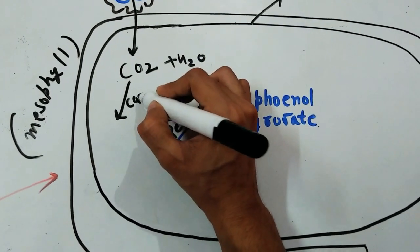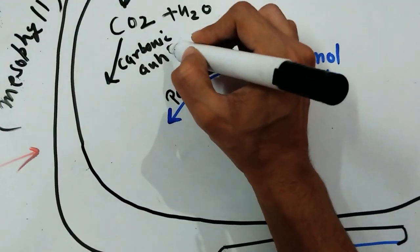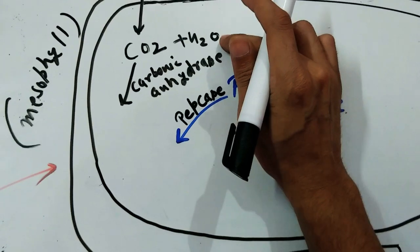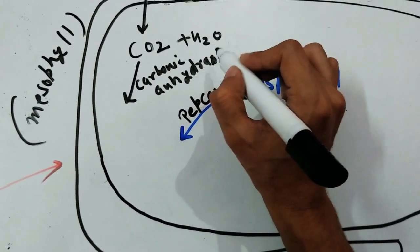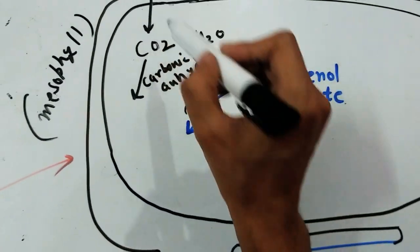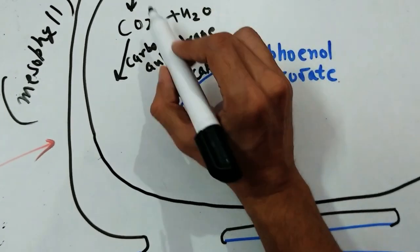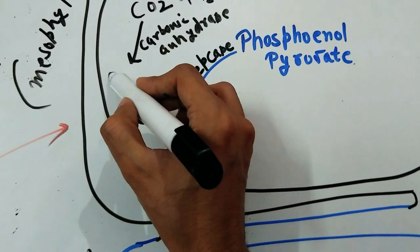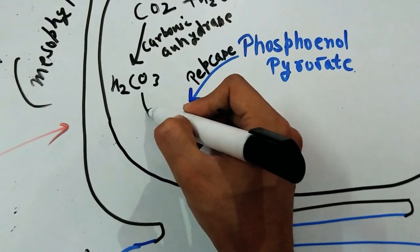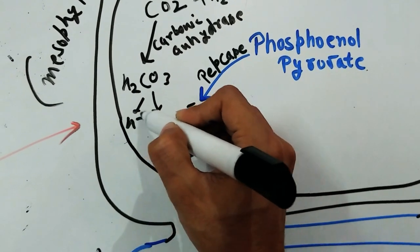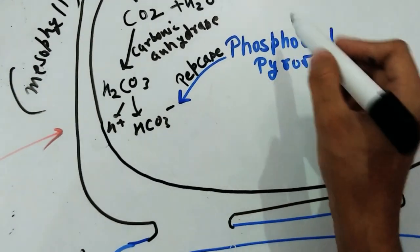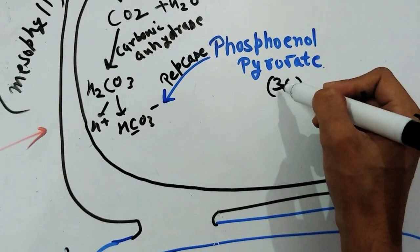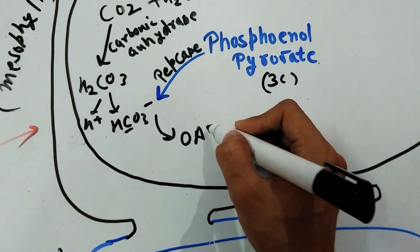The most important enzyme here is carbonic anhydrase — this is the fastest enzyme in our biosphere. Rubisco is the most abundant protein, and carbonic anhydrase is the fastest enzyme. Carbon dioxide diffuses in through the stomata into the chloroplast of the mesophyll cell. In the presence of carbonic anhydrase, CO2 reacts with water to form H2CO3, which then loses H⁺ to give HCO3⁻. There is also an attachment with phosphoenolpyruvate, a three-carbon compound, leading to the formation of oxaloacetic acid.